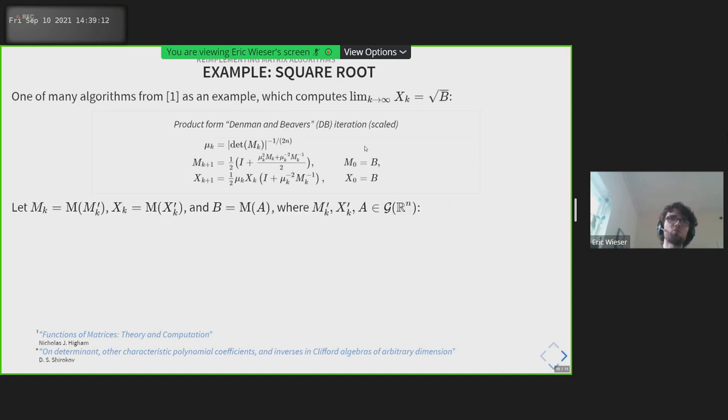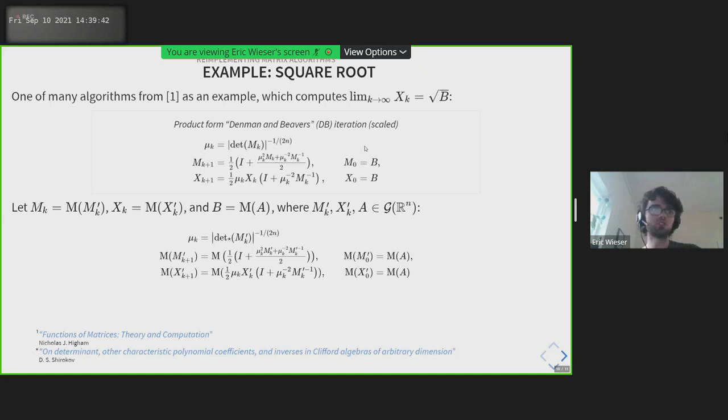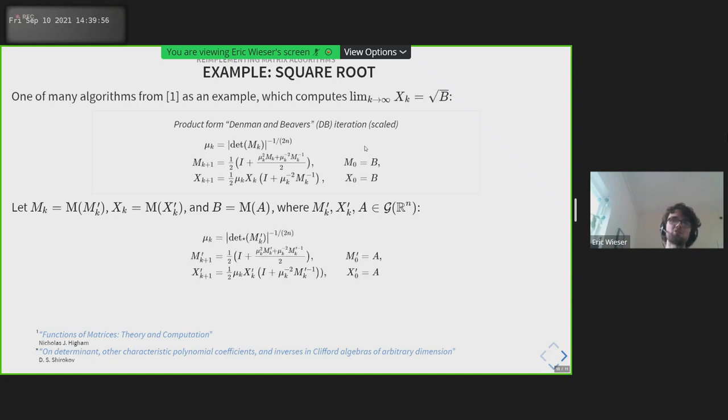So we can hypothesize, what if we set M_k to be - let's pretend there is a multivector corresponding to each of these variables. We'll say that M_k is the matrix corresponding to M_k prime, X is the matrix corresponding to X_k prime, and B is the matrix corresponding to the multivector A. We can substitute these in, and then we can use our rules about algebra morphisms to pull M to the outside of the expressions. Here, we now need the determinant of a multivector, which Shirokov has provided in this paper on determinant of the characteristic polynomial coefficients and inverses in Clifford algebras of arbitrary dimension. Now the final step is we know we have M applied to both sides of all our equalities, and M is injective. So we can just remove it. And what we're left is an algorithm that's almost identical, but now works in multivectors.